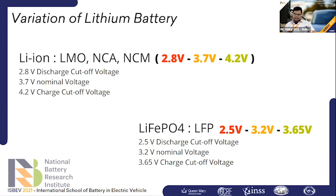Lithium iron phosphate has a nominal voltage of 3.2 volts, an upper charge cutoff voltage of 3.65 volts, and a discharge cutoff of 2.5 volts. These voltage and current characteristics are important parameters to know when forming battery testing procedures.